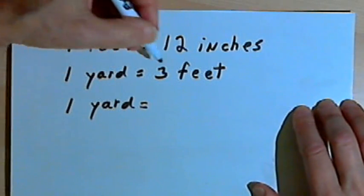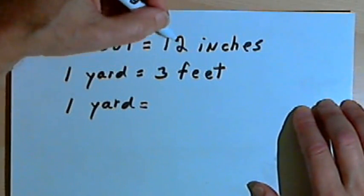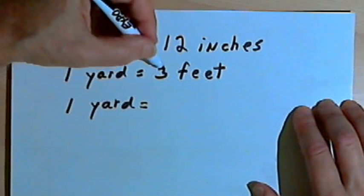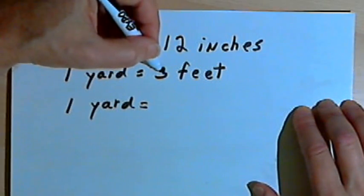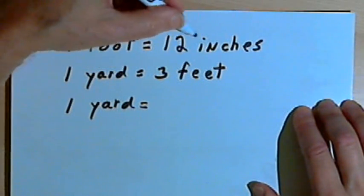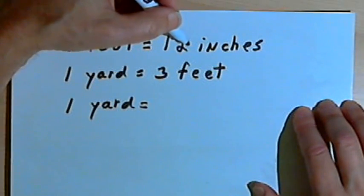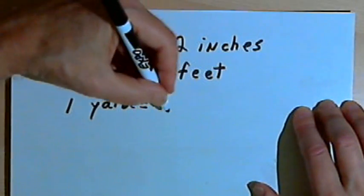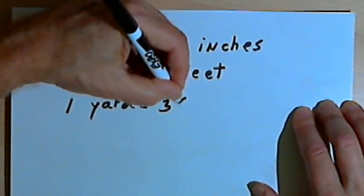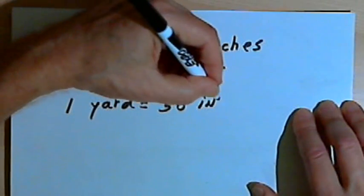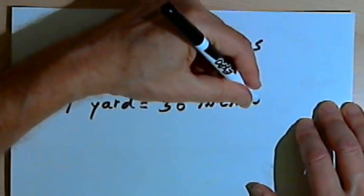If one yard equals 3 feet and each of those 3 feet has 12 inches, then if we multiply 3 times 12 inches, we should get the number of inches in the yard. So 3 times 12 is 36, that's going to be 36 inches.